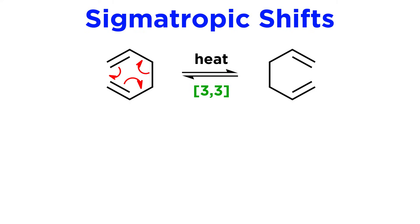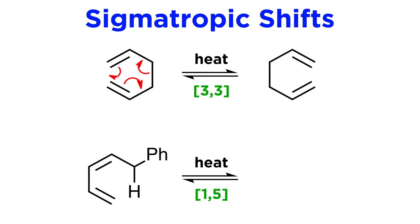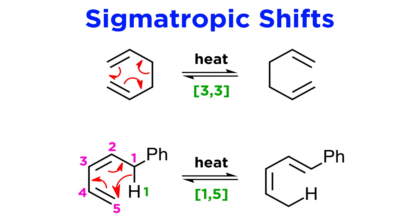Before moving on, we should mention that it is not just 3-3 shifts that are possible. Other types can happen as well, though they are not as synthetically useful. One example is the 1,5-hydride shift. This still involves four pi and two sigma electrons, but we are seeing a hydride shift from one carbon to another one four carbons away. The pi bonds shuffle around and we are left with this, with the equilibrium heavily favoring the product due to the conjugation of the phenyl ring with the other pi bonds. And that covers an introduction to sigmatropic shifts.